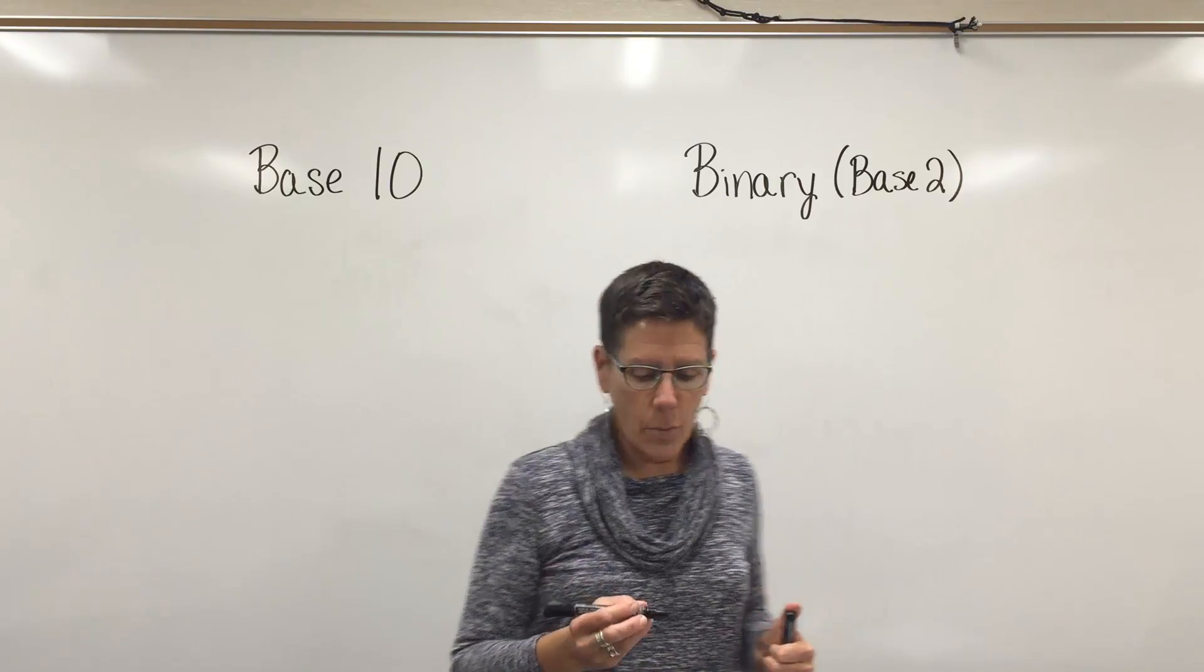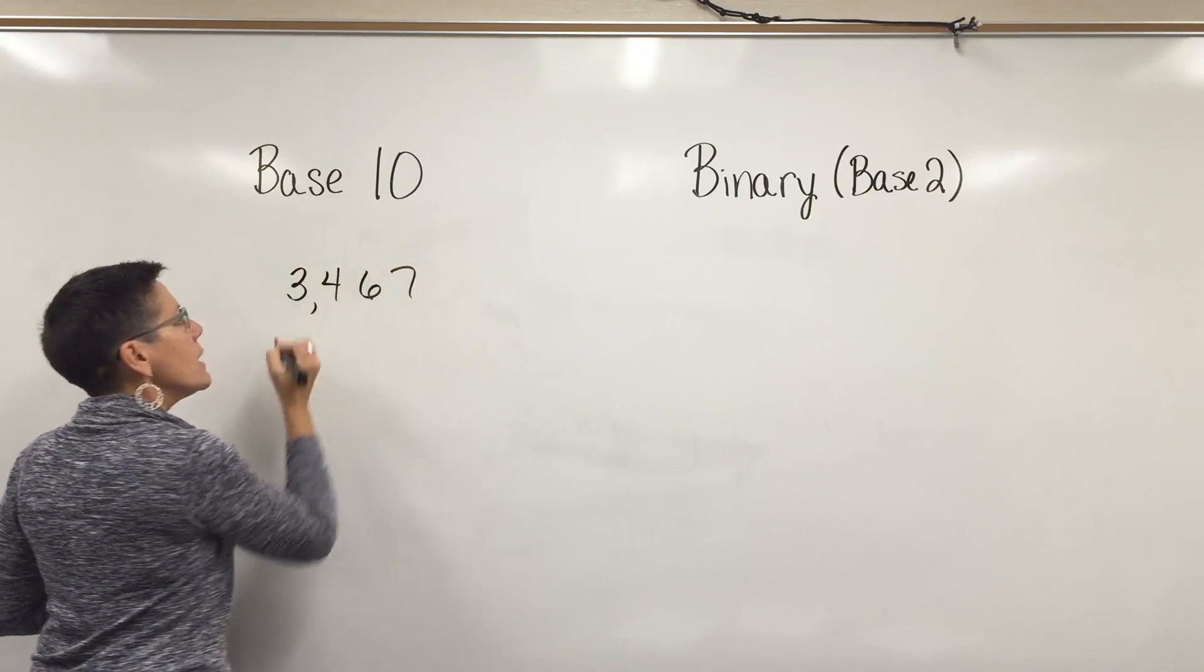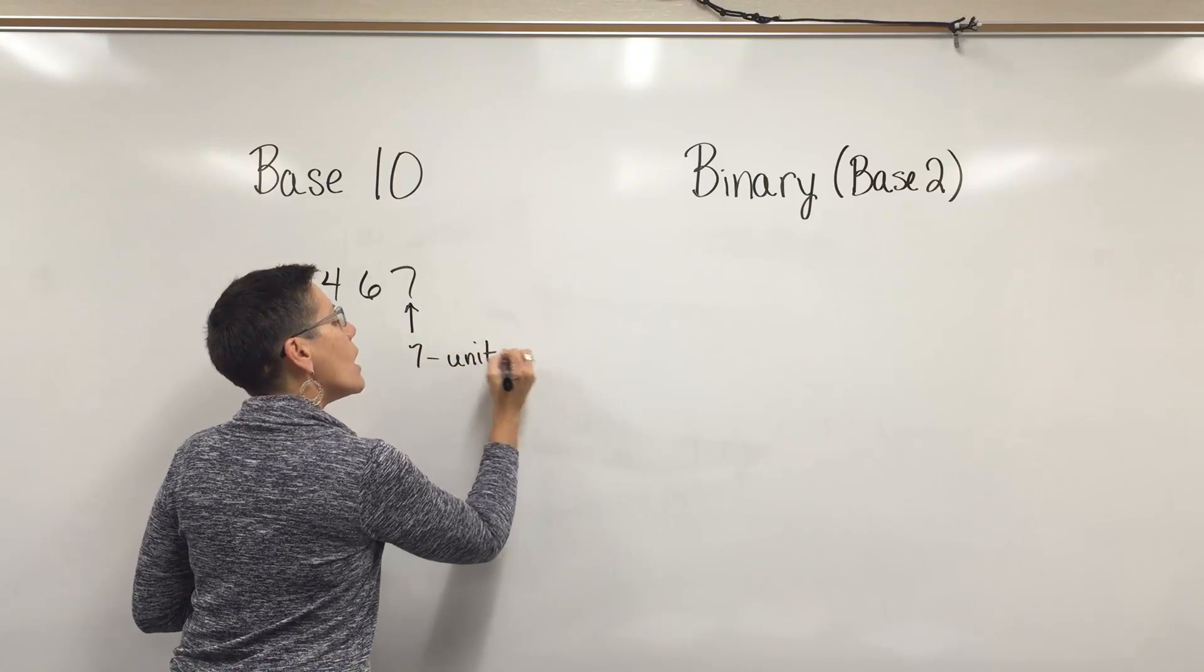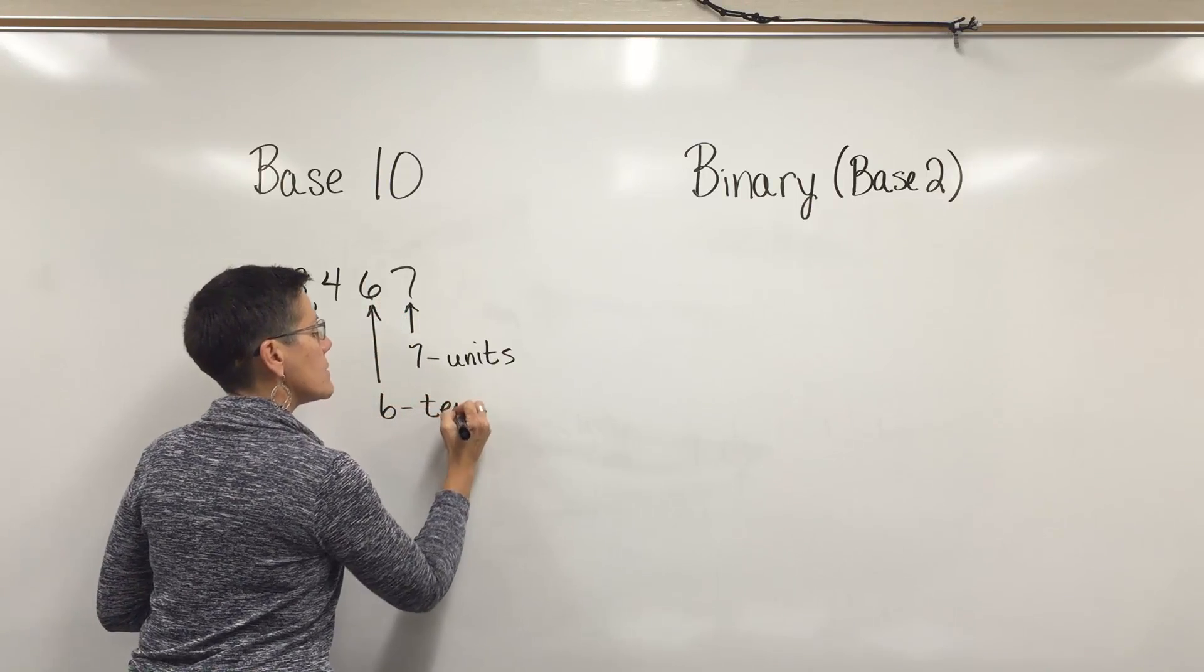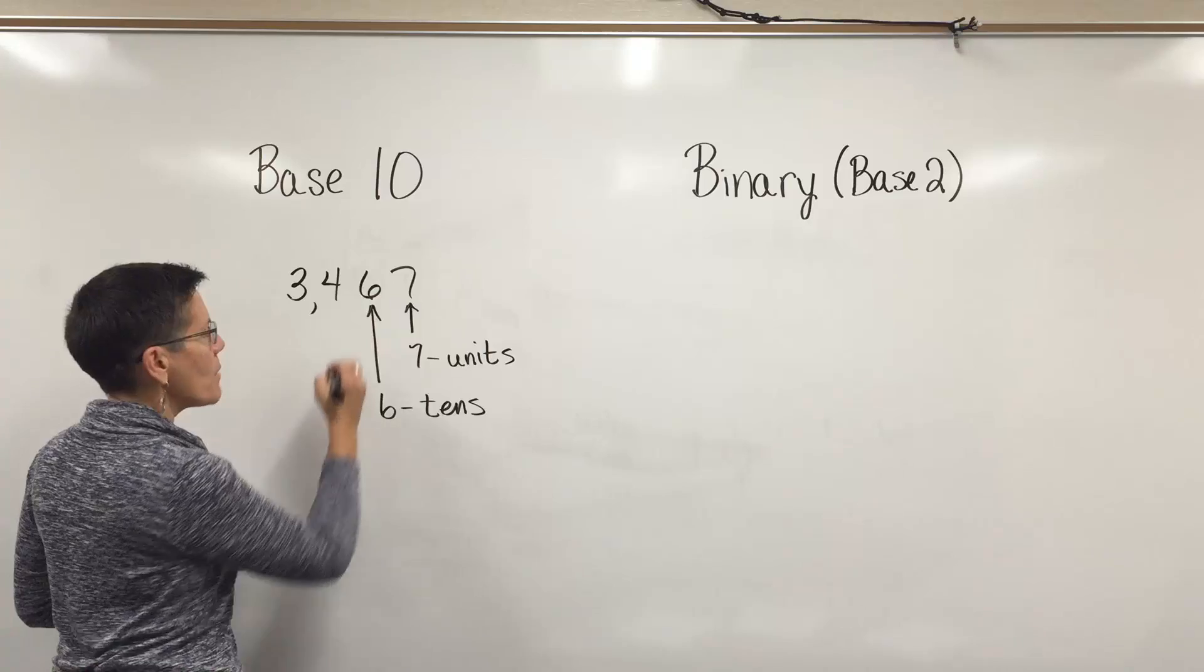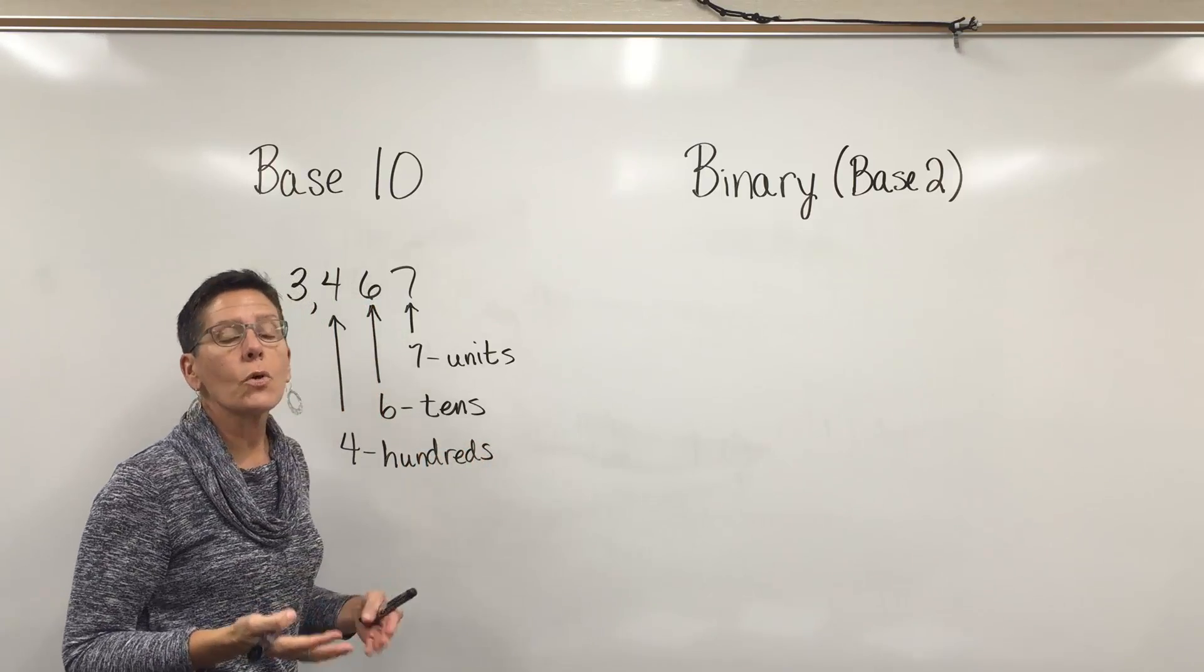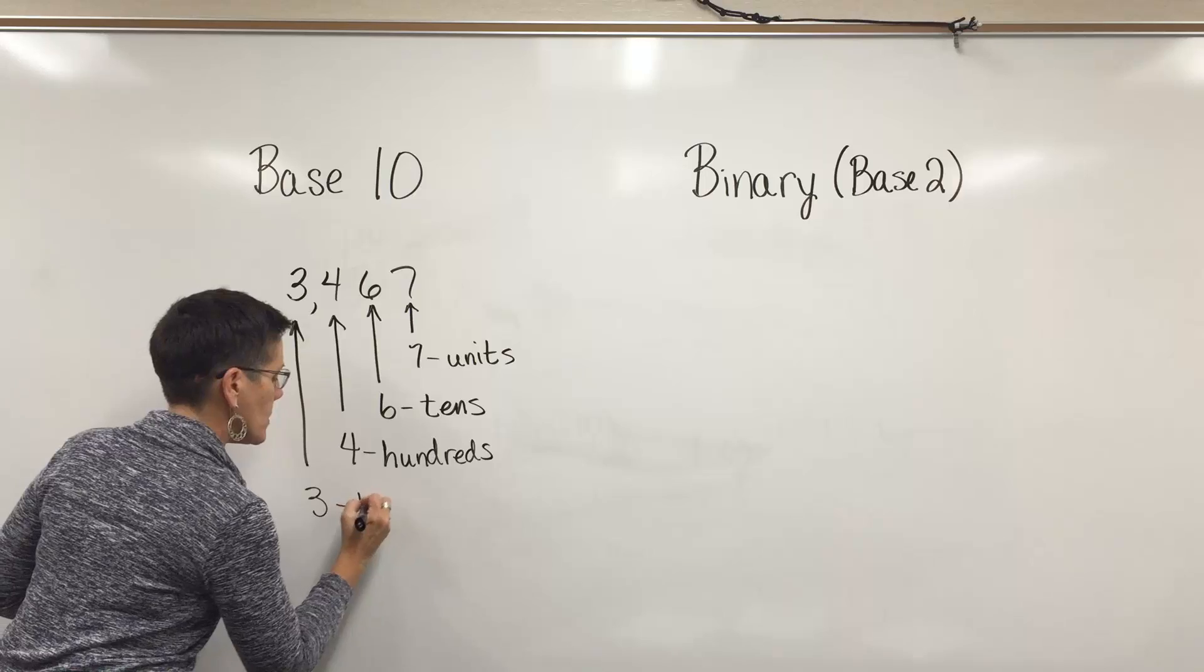To do this, I'd like to start with a number such as 3,467 in the base 10 world. You're accustomed to this number where the seven is in the ones place and represents seven ones. This six is in the tens place and represents the number 60. The four is in the hundreds place and means there are four hundreds, and the three is in the thousands place.